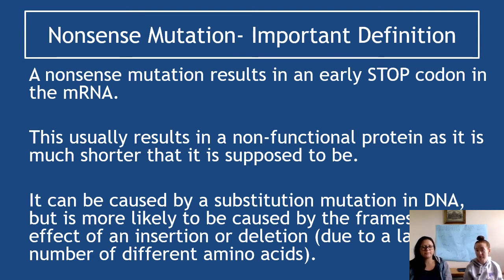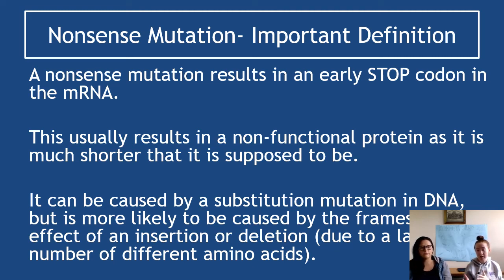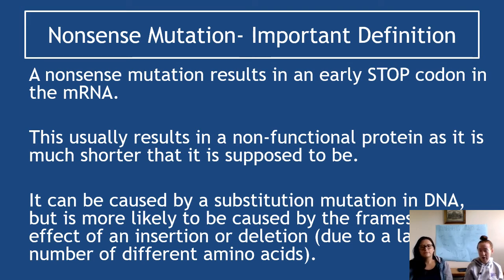The other type of mutation is a nonsense mutation. An important definition: a nonsense mutation results in an early stop codon in the mRNA. Rather than just affecting one amino acid, it results in an early stop codon, which means the protein will be non-functional because it is much shorter than it should be — the ribosome stops producing it much earlier than required. This often comes up in exams: the comparison is that the mutated protein is shorter than the protein would be without the mutation, because the early stop codon means less of the protein has been translated.